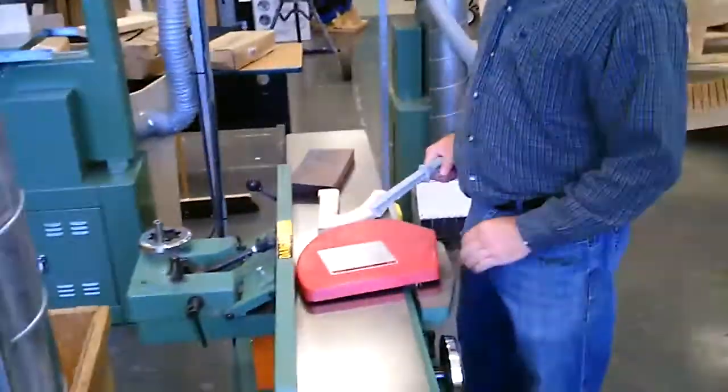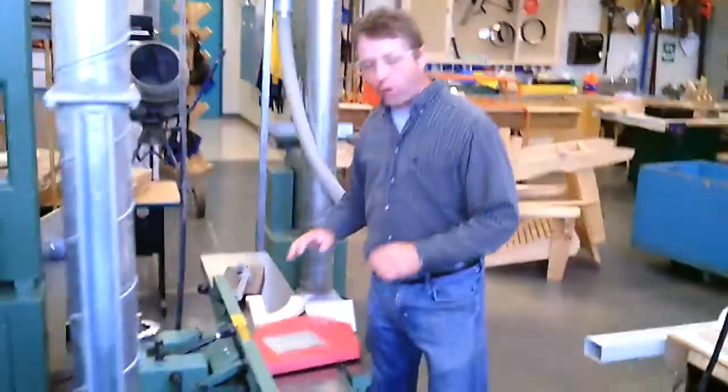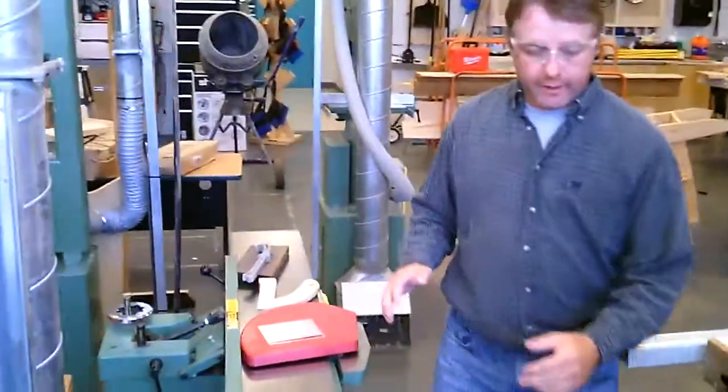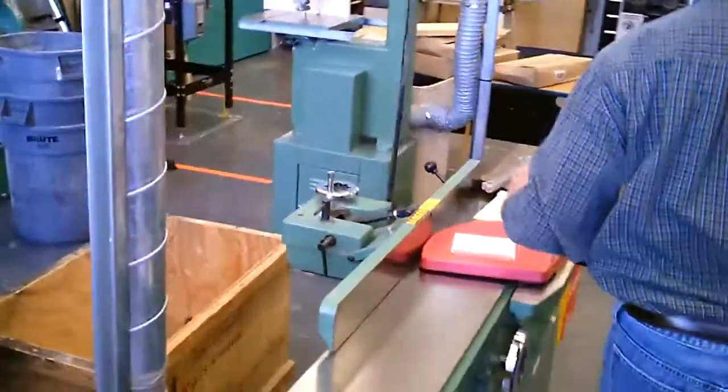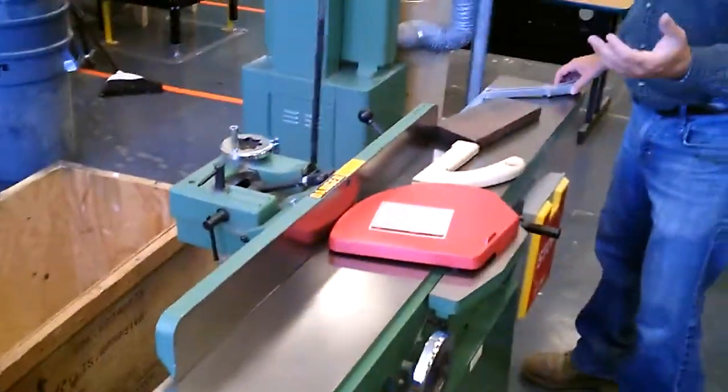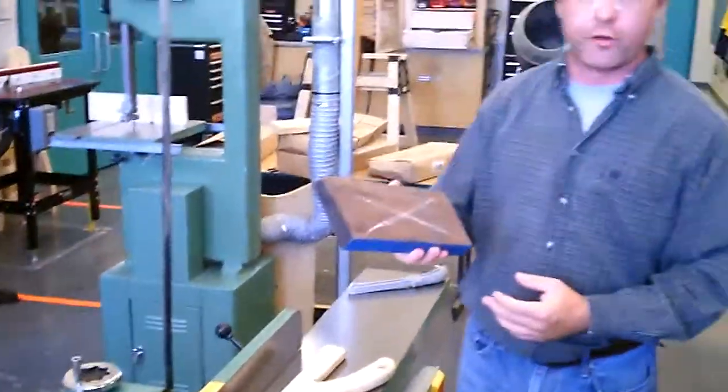Okay, so this here is the jointer. First off, even before you join any material, if you're doing softwood or hardwood, this is hardwood right now, this here is walnut.